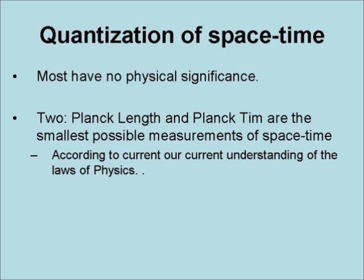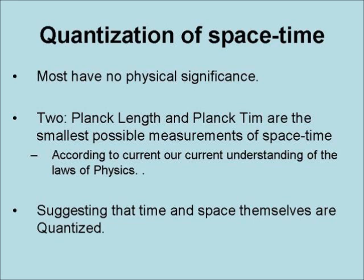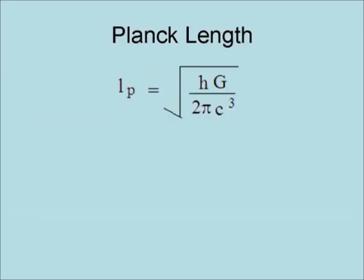Specifically, the uncertainty principle when applied to these scales suggests that space and time themselves may be quantized. The formula for Planck length shown here is the square root of Planck's constant times the gravitational constant divided by 2π and the speed of light cubed.